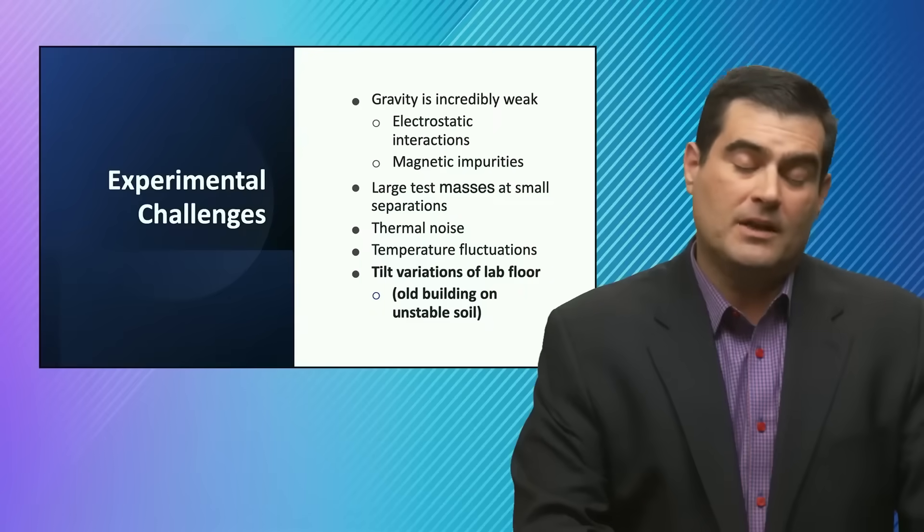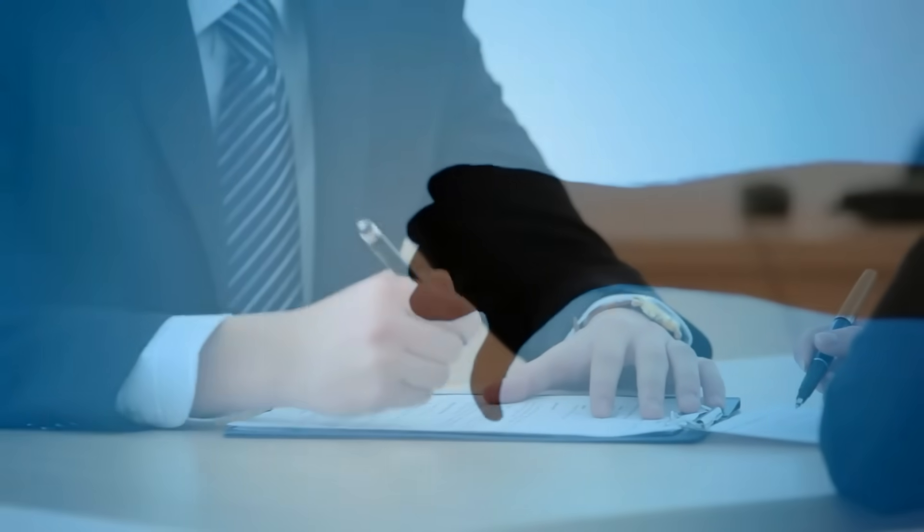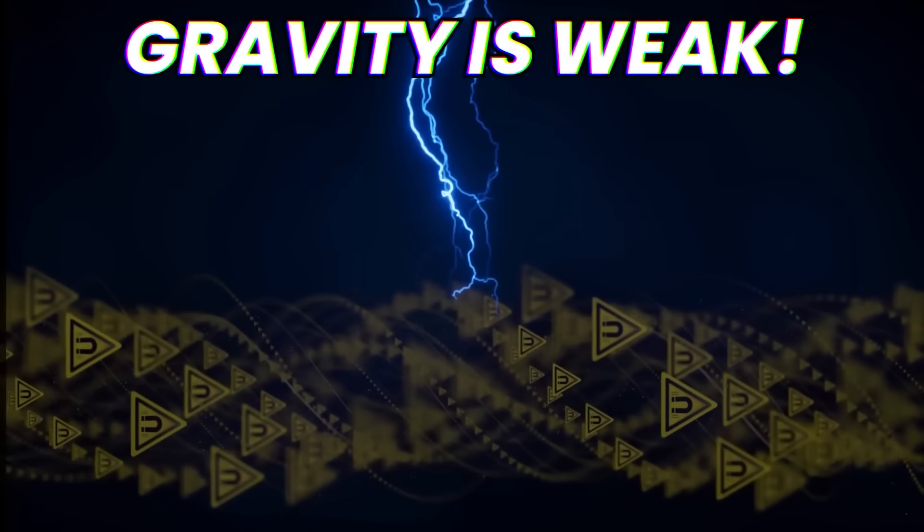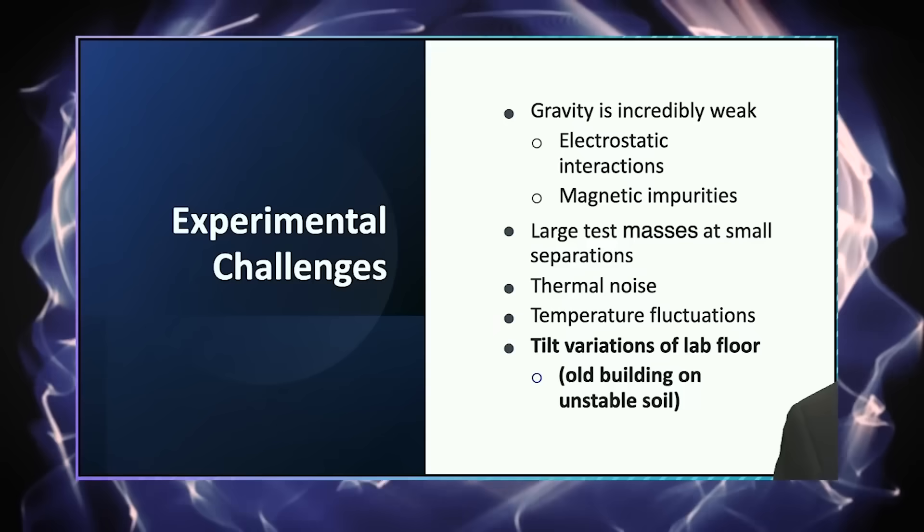Gravity is incredibly weak. There are interactions—electrostatic interactions, magnetic interactions—the test masses have to be brought in from different distances and changed and measured over those distances.